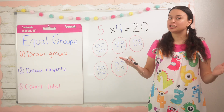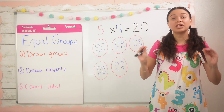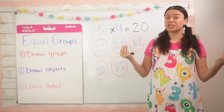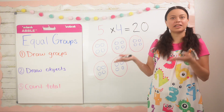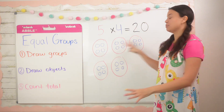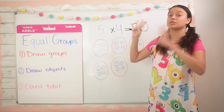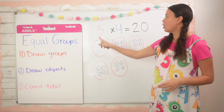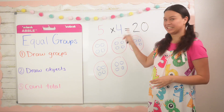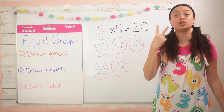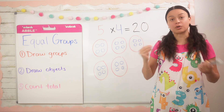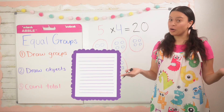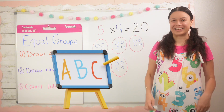Just to let you know, this equal groups strategy is really good when we're multiplying one digit by one digit. Once we start multiplying bigger numbers, this is not the best strategy to use because we'd just be drawing so many circles, so many groups, so many objects — it would just be a lot. So this strategy is really good for one digit by one digit. All right besties, I taught you two examples. Go ahead and grab a paper, a pencil, or a whiteboard and let's do some problems together. Let's go.